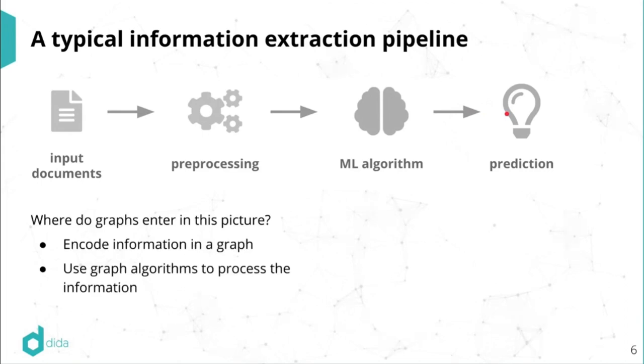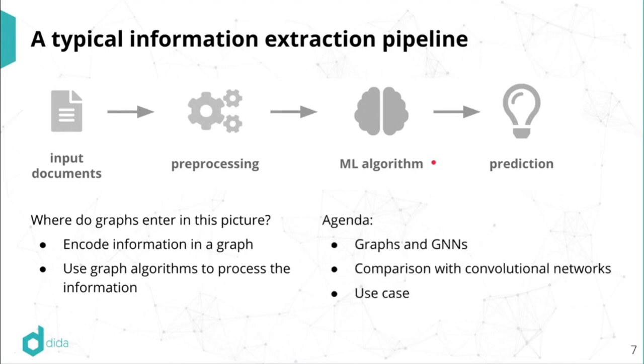Okay, so where could graphs potentially enter in this picture? And there's two places. So in the preprocessing step, we would like to take this document or this data and encode it using a graph in a way that meaningfully captures the structure of the input data. And then in the second step, this number crunching step, we would like to use an algorithm that can consume and make good use of this graphy data we got.